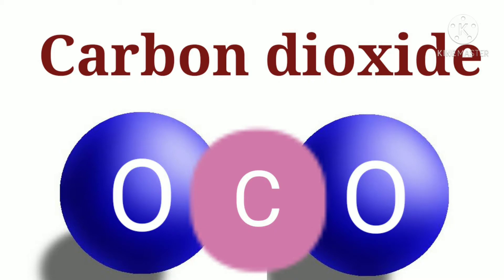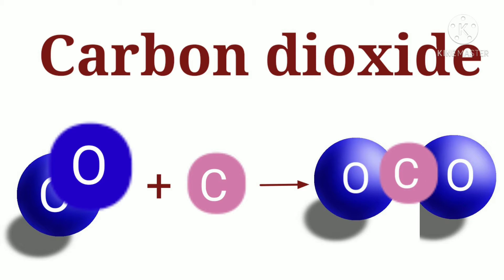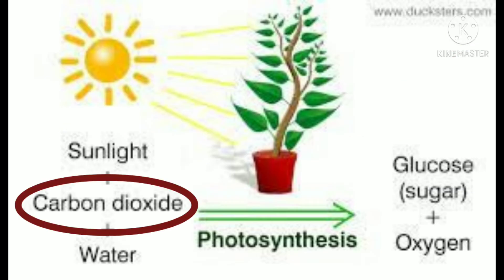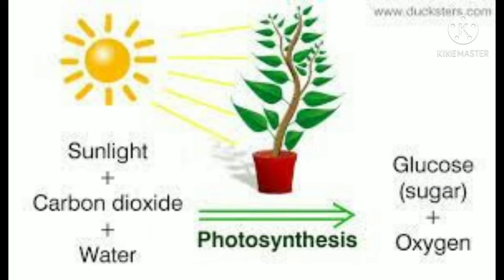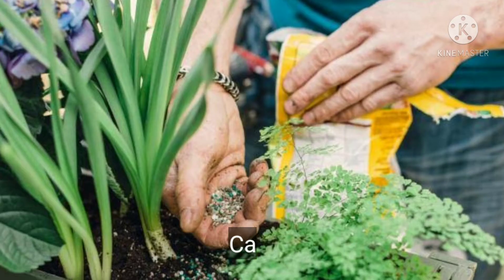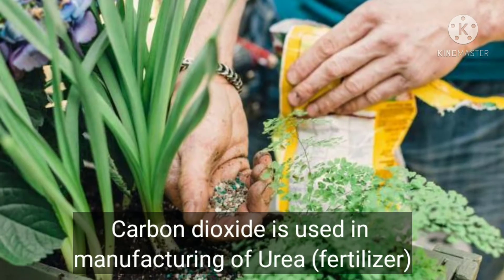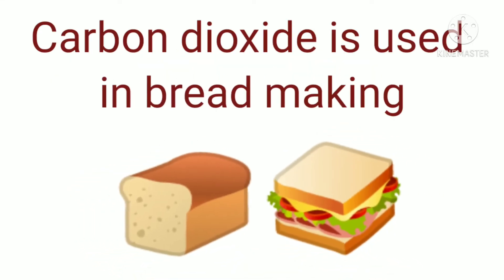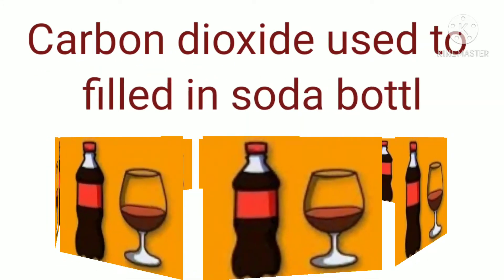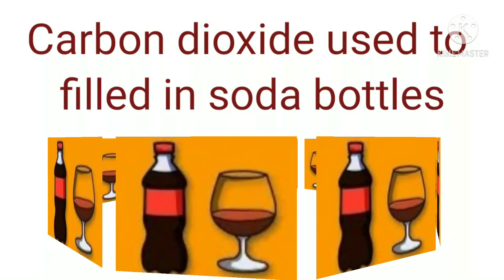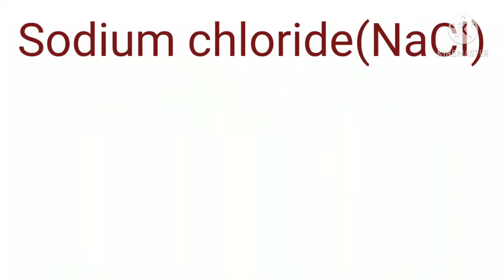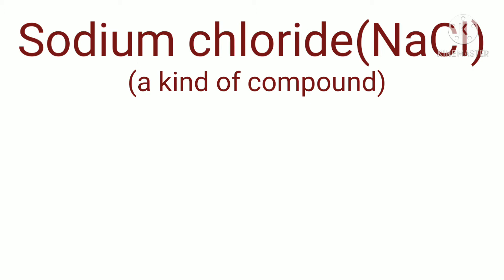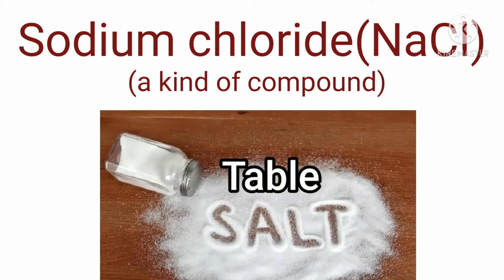Iske ilawa carbon dioxide — carbon dioxide bhi ek compound hai. Carbon aur oxygen jo hain wo milkar banate hain carbon dioxide. Carbon aur oxygen ke milne se carbon dioxide banta hai, jo plants ke liye zaruri hai.